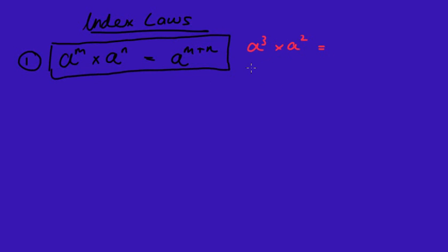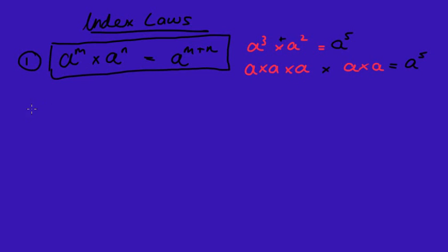So what does a cubed actually mean? Well, a cubed means a times a times a. a squared means a times a. And because we're multiplying them together, if I've got three of them and then two more, I've got five of them — which is the same as saying three plus two — so it's a to the power of five. When you multiply the bases, we simply add the powers together.